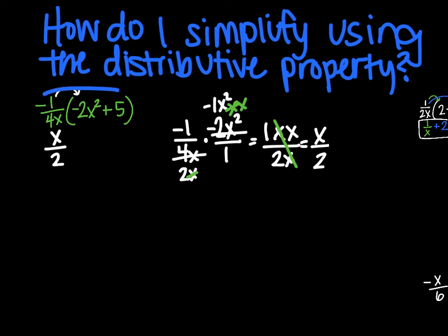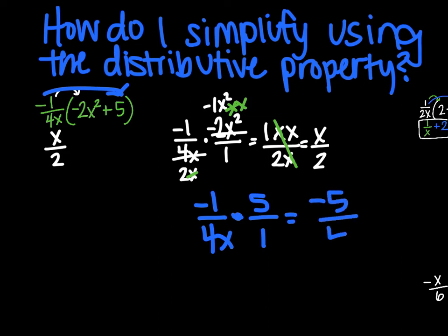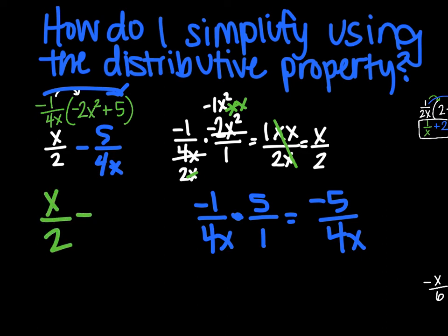Feed the birds again: negative 1 over 4x times 5 over 1. No simplifying can happen here, so just multiply: negative 5 over 4x. So the final answer is x/2 − 5/(4x).